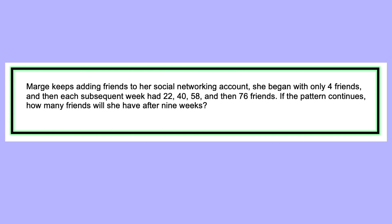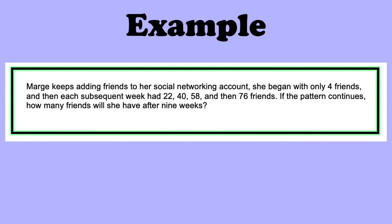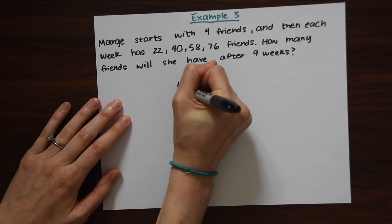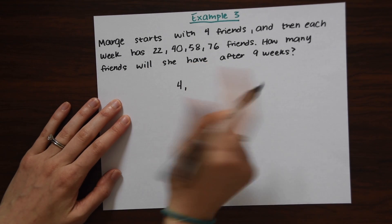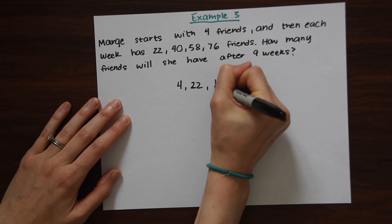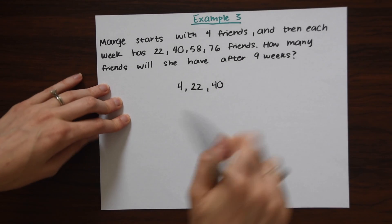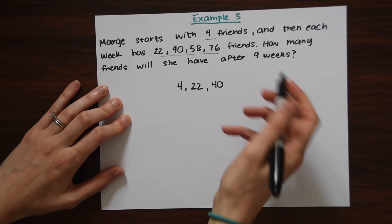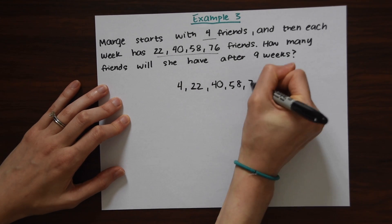This is a little different. We have a word problem this time. It says Marge keeps adding friends to her social networking account. She began with only 4 friends and then each subsequent week had 22, 40, 58 and then 76 friends. If the pattern continues, how many friends will she have after 9 weeks? So Marge is very popular. And she starts with 4 friends. And then has 22, 40. So I'm just taking everything from right here. 4 friends. And then this pattern here. 22, 40, 58 and 76.